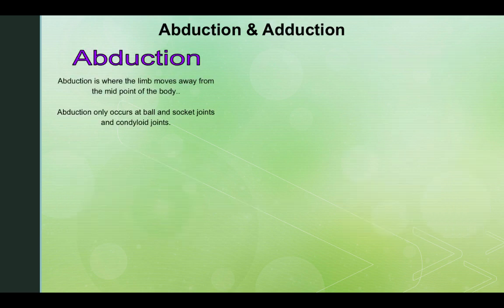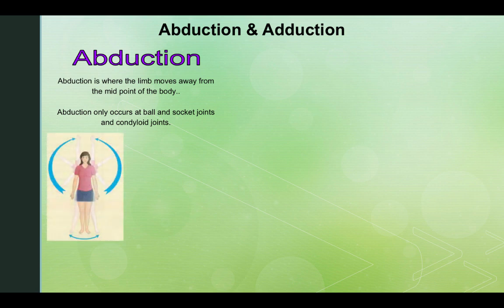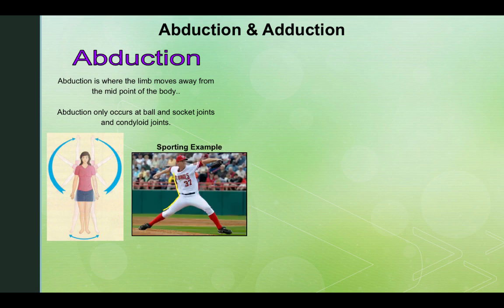Abduction and adduction. Abduction is where the limb moves away from the midpoint of the body. Abduction only occurs at a ball and socket joint and condyloid joints. This would be if you raised your arms from your hip up towards your head. A sporting example of this would be throwing a baseball, as the arm moves away from the midpoint of the body — it abducts.